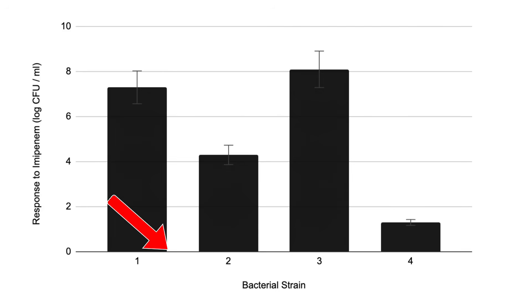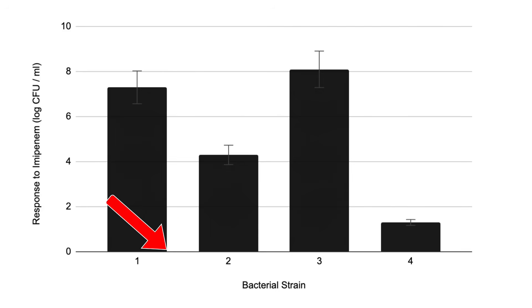Notice how the values between the bars have no meaning whatsoever, because strains A, B, C, and D are not numerically relevant to one another. That being said, there are some tricky situations where a seemingly continuous variable such as time or temperature still would call for a bar graph.